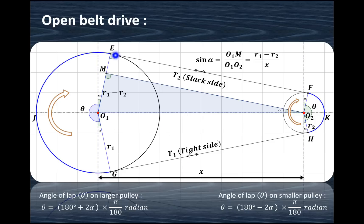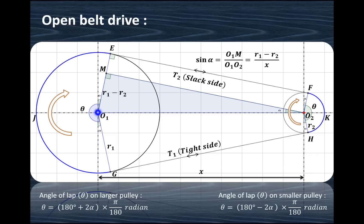As this radius is R1 and this radius is R2, if we draw a perpendicular — O2m is perpendicular to O1E and is parallel to EF. Therefore, this distance will be R1 minus R2. We can define the small geometric angle alpha here. By geometry, if this angle is alpha, this is also alpha. So sin alpha equals the opposite side, which is R1 minus R2 — because from O1 to E that distance is R1, and from M to E that distance is R2 — divided by the hypotenuse, which is the center distance X. So sin alpha is given by (R1 minus R2) divided by X in case of the open belt drive.